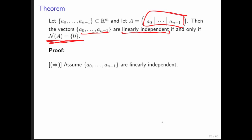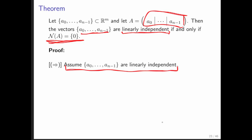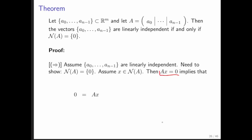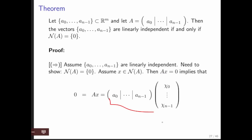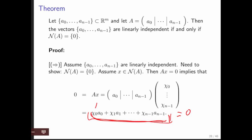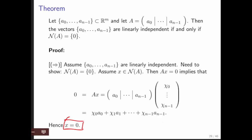To prove this, start by assuming the vectors are linearly independent. You need to show the null space of A is just zero. Assume x is in the null space of A, so Ax = 0. You can write this as a linear combination of the column vectors, which can only equal zero if all coefficients are zero. Therefore x must be the zero vector, and the null space of A contains only the zero vector.